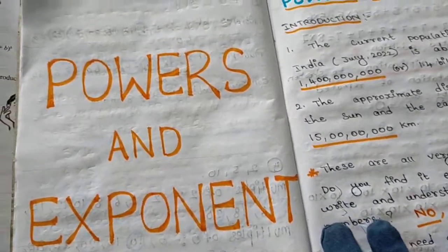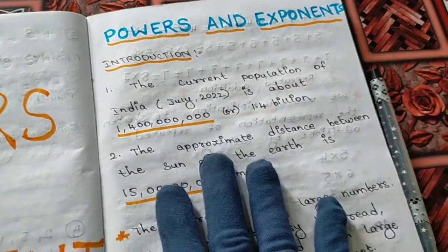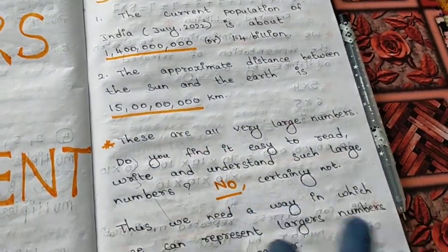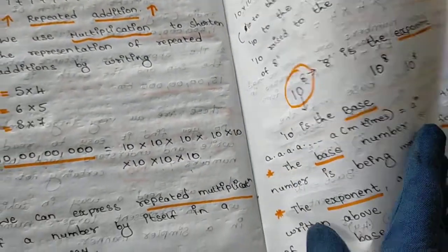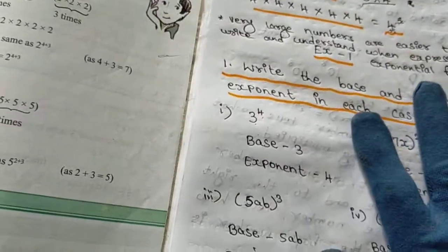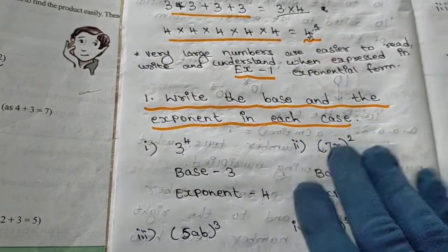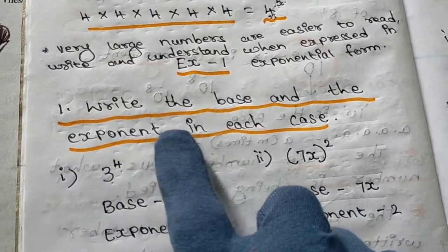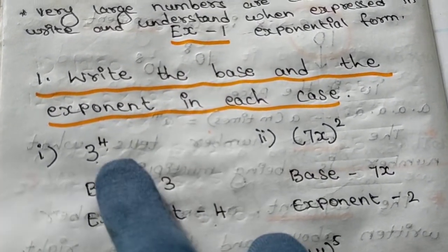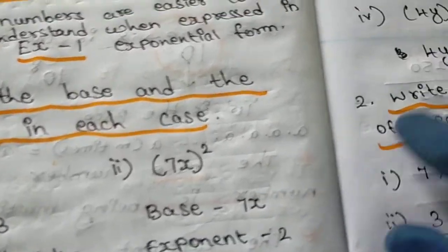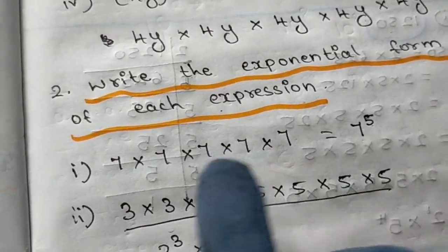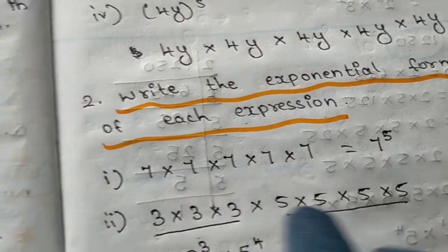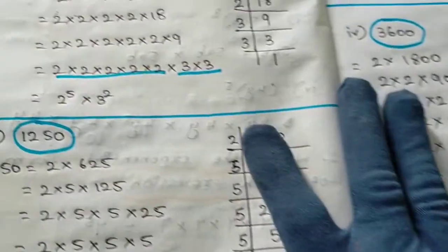Coming back to my notes — we have done an introduction to powers and exponents: what is the importance of powers and exponents, how it came into existence, what do you mean by power and exponent with various examples, what is the meaning of base, what is an exponent. Then we started with exercise 1 and learnt how to write the base and exponent of a given term, how to write the expanded form of a given exponential form, and how to write the exponential form if the expanded form is given. You can check out those videos on my channel.